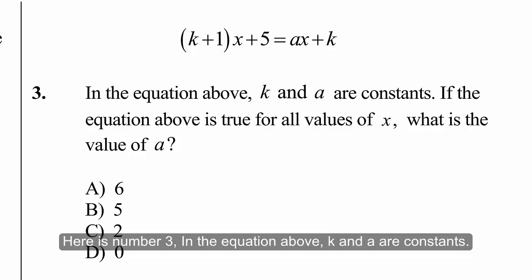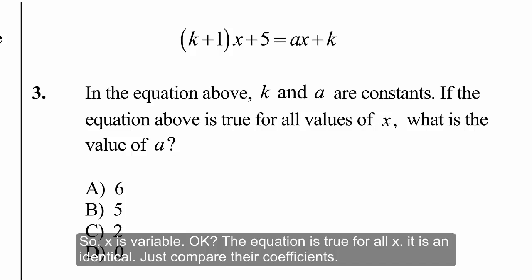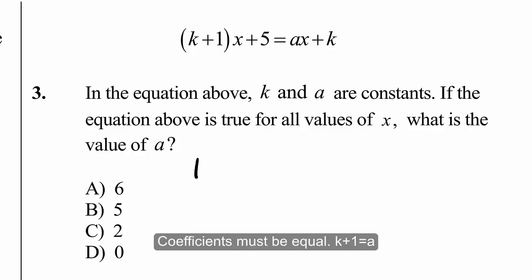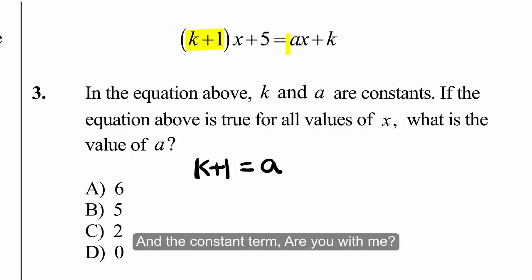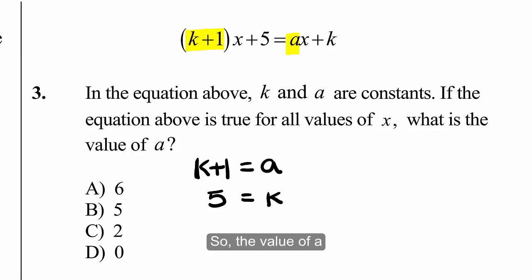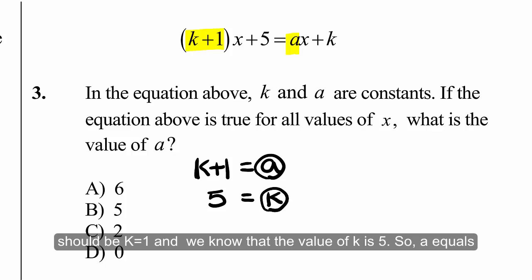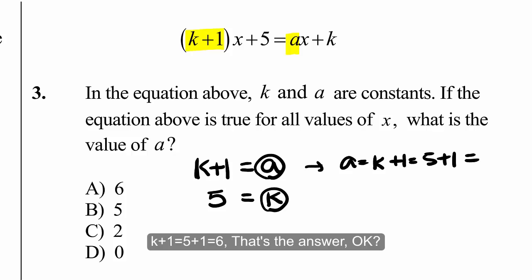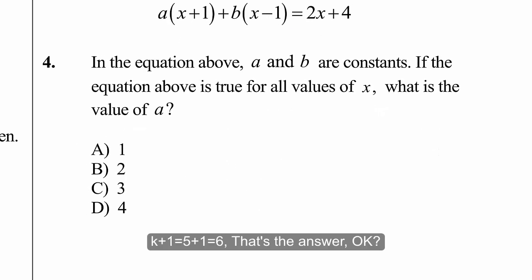Number three: in the equation, k and a are constants and x is the variable. The equation is true for all x, so it is an identical equation — just compare the coefficients. The coefficient of x gives k + 1 = a, and the constant term gives 5 = k. So k = 5, and therefore a = k + 1 = 5 + 1 = 6.